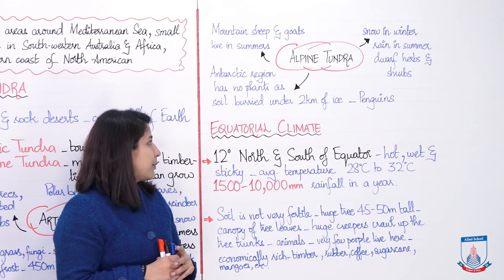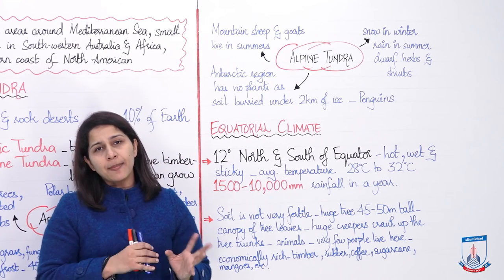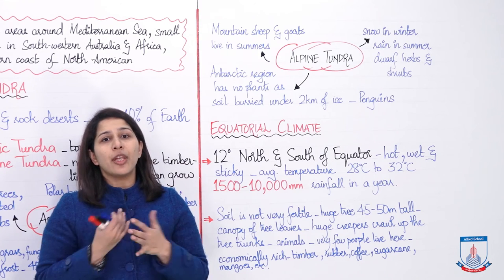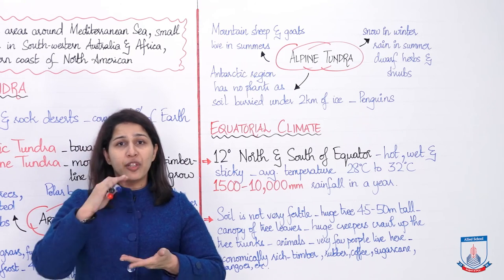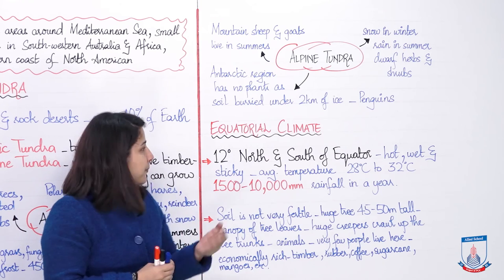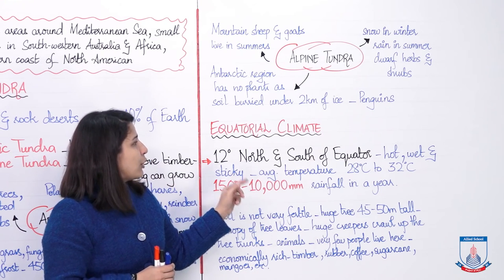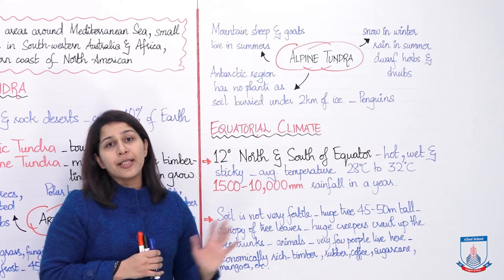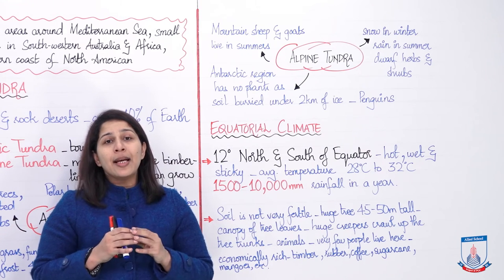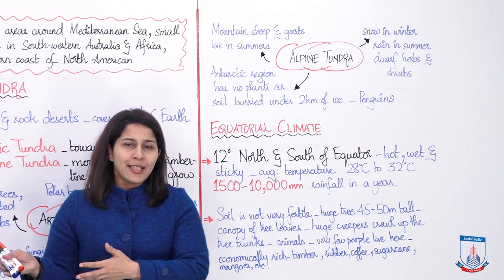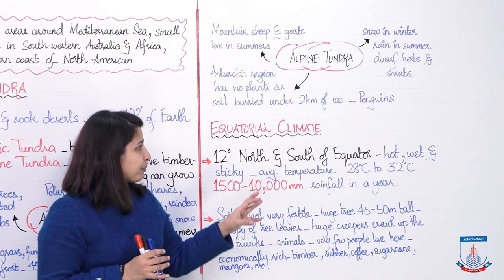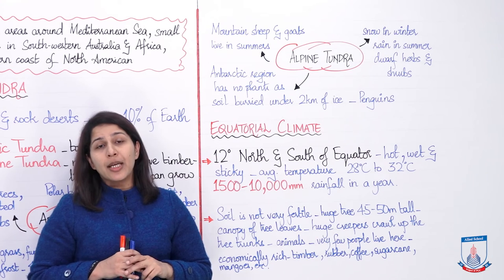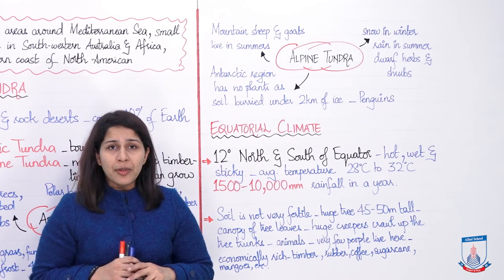Moving on — we have equatorial climate. Equatorial climate, jaisa ke naam suggest kar raha hai, it is the climate of the regions around the equator. The equator is the line which divides the Earth into two parts. 12 degrees north and south of the equator are the regions where equatorial climate is experienced, with the exception of mountainous regions. The characteristics are hot, wet, and sticky.